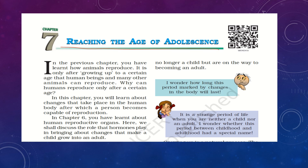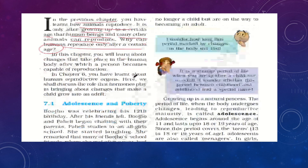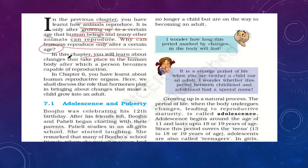You all are in 8th standard, so you have already reached the age of adolescence. We should know what changes are happening in our body during this stage. In the previous chapter, we covered how animals reproduce. It is only after growing up to a certain age that human beings and many other animals can reproduce. In this chapter, you will learn about the changes that take place in the human body after a person becomes capable of reproduction.